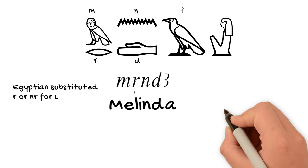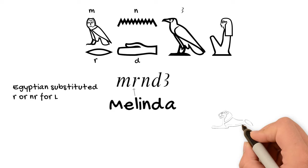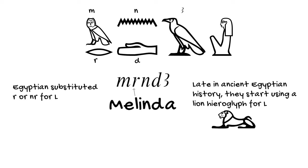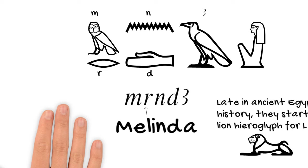Now you've probably seen these hieroglyphic alphabet charts that show a lion as the L sound. And this was used in later Egyptian history, especially when they had to represent this sound in Greek names a lot. But for most of Egyptian history, they didn't do this. So I prefer to stick with using an R to substitute. But of course, for your own name, you can do it whichever way you like.